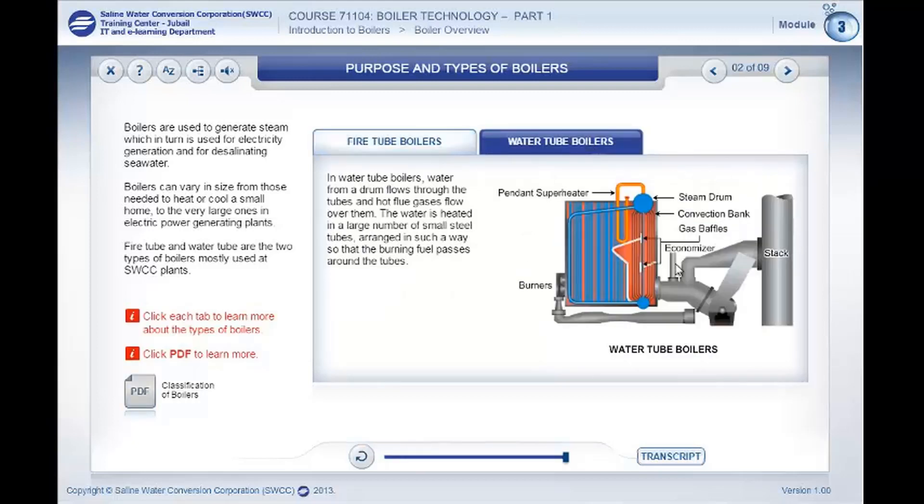In water tube boilers, water from a drum flows through the tubes and hot flue gases flow over them.